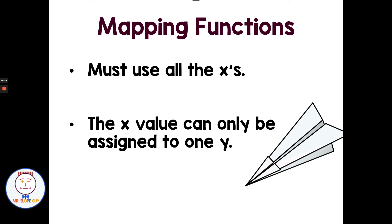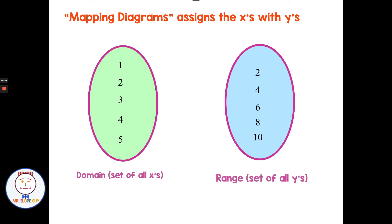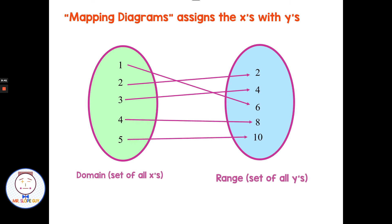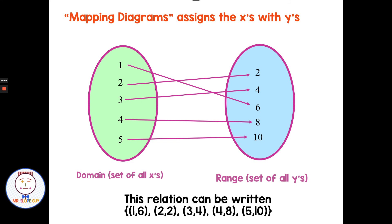Now we have what's called mapping. Mapping is a little different for determining if you have a function. The rules: all the x's must be used, and each x value can only be assigned to one y. They use circles with groups and lines matching numbers. For example: 1 with 6, 2 with 2, 3 with 4, 4 with 8, 5 with 10. Are all the x's used? Yes. Do any repeat? No — each domain value is used one time with the range. The x values are 1, 2, 3, 4, and 5 with no repeats, so that makes it a function.